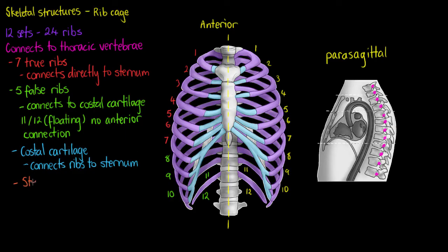The next structure we're going to look at is our sternum. The sternum consists of a few different features and we'll see it on this parasagittal view as well and talk about all the individual parts of our sternum now.